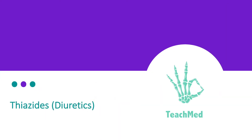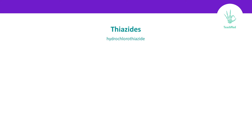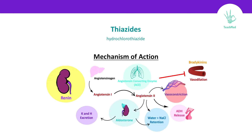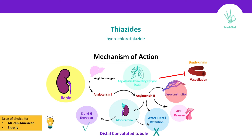Thiazide is one of the diuretics; an example is hydrochlorothiazide. It works by preventing the reabsorption of sodium and chloride from the distal convoluted tubule. So when you lose sodium, chloride, and water, it means you're lowering the blood pressure. It also keeps losing potassium and hydrogen. It is a good option for African American as well as elderly patients.